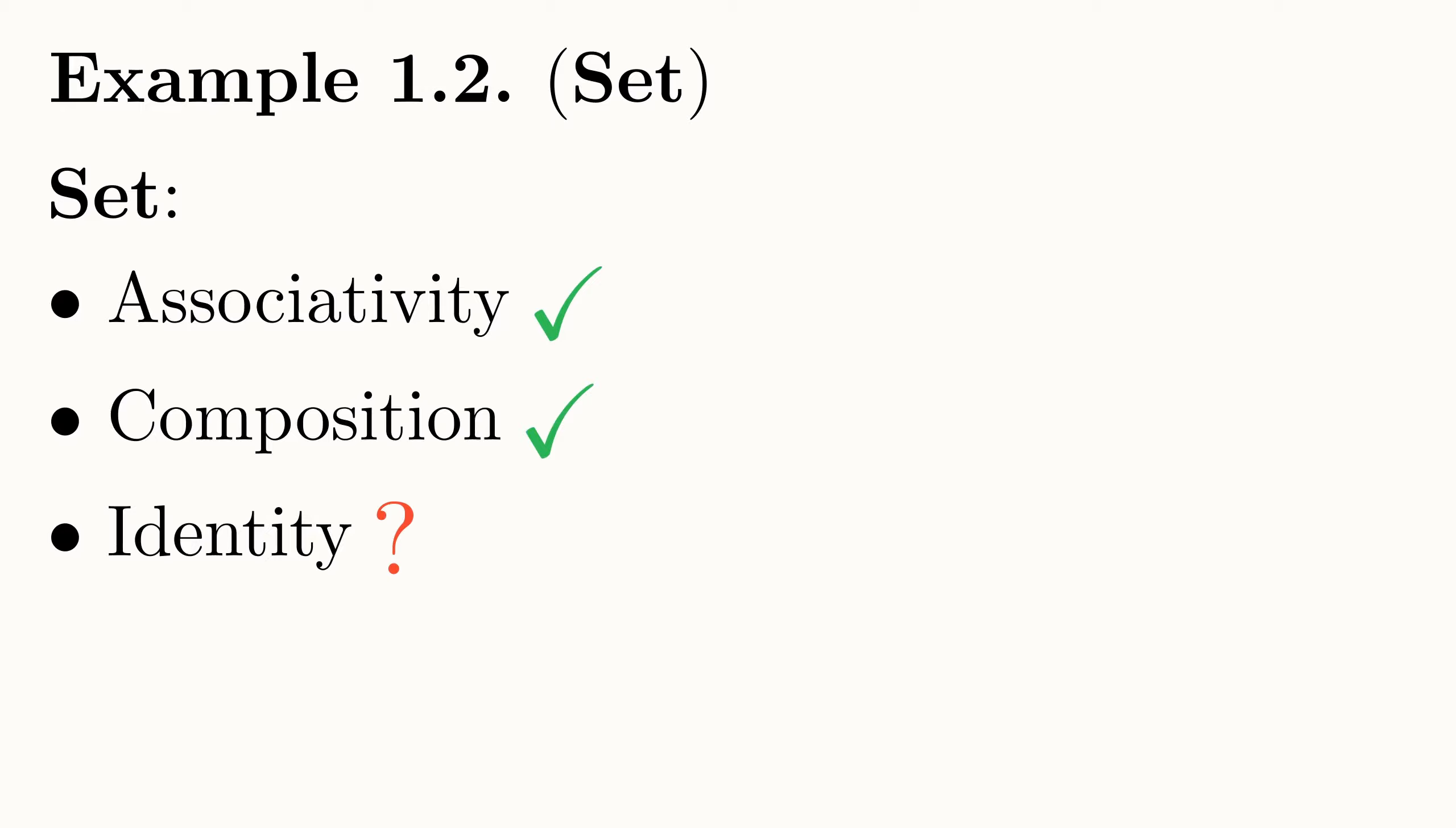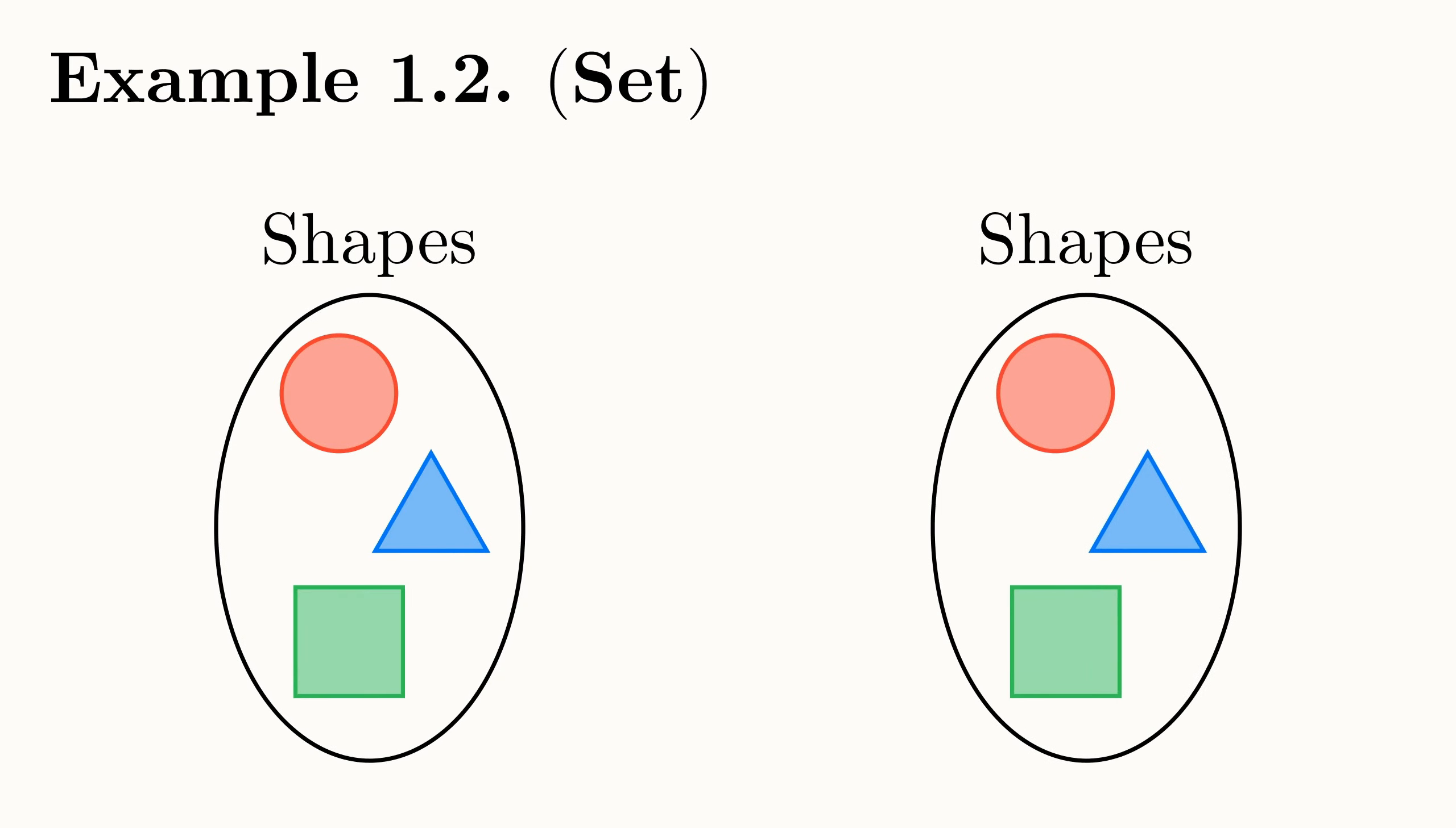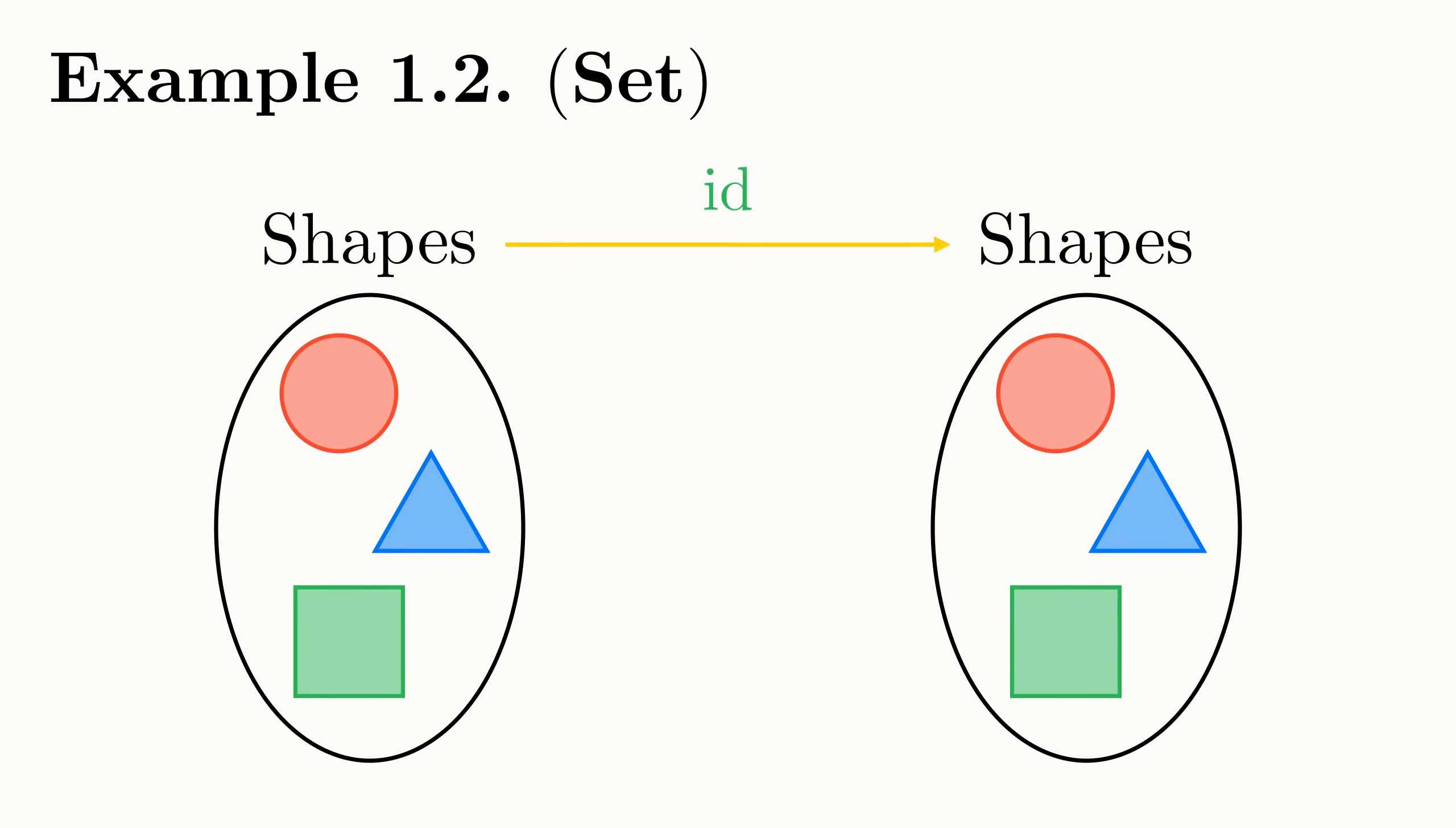Now we have to ensure that the laws of identity hold. Firstly, is there an identity function defined on every set? Without too much thought, we can realize that there is. Just define the identity function on any set as the function that maps each element in that set to itself. This also satisfies our unit law, that this identity function is the unit of composition.